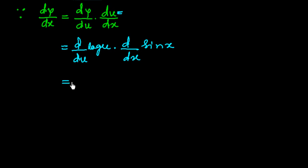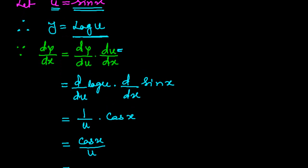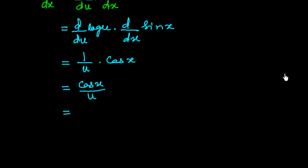It is equal to: if we differentiate log u we get 1 over u, because the differentiation of log u is 1 over u, and the differentiation of sin x is cos x. So it is equal to cos x over u. Now we put down the value of u since u is equal to sin x, so we get cos x over sin x.